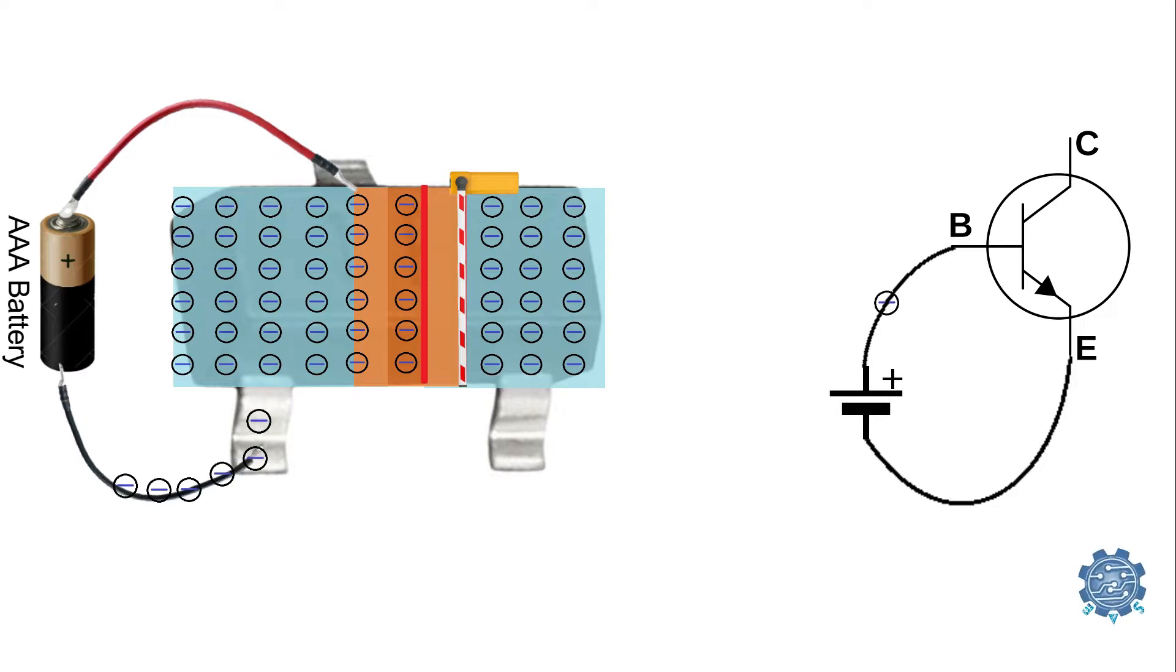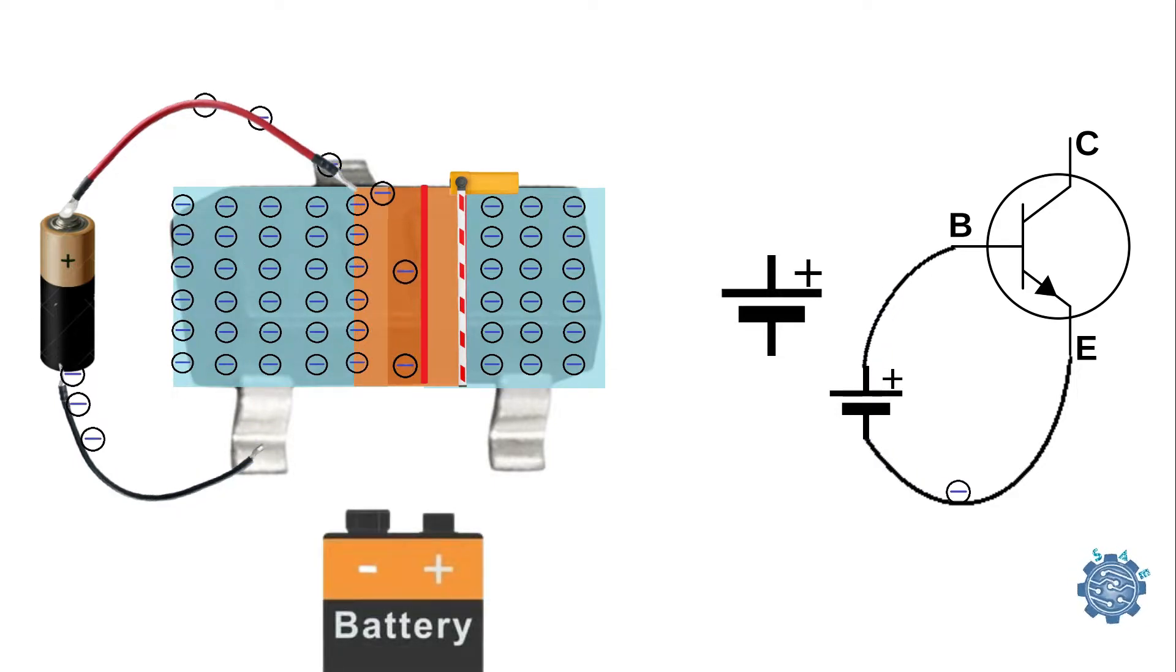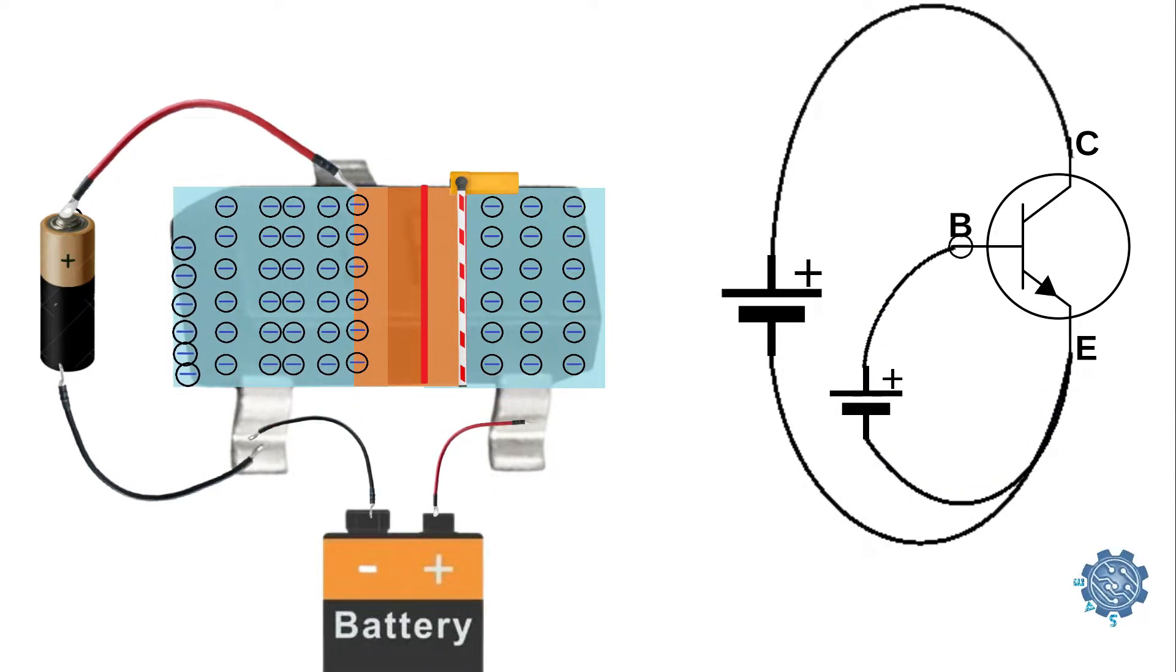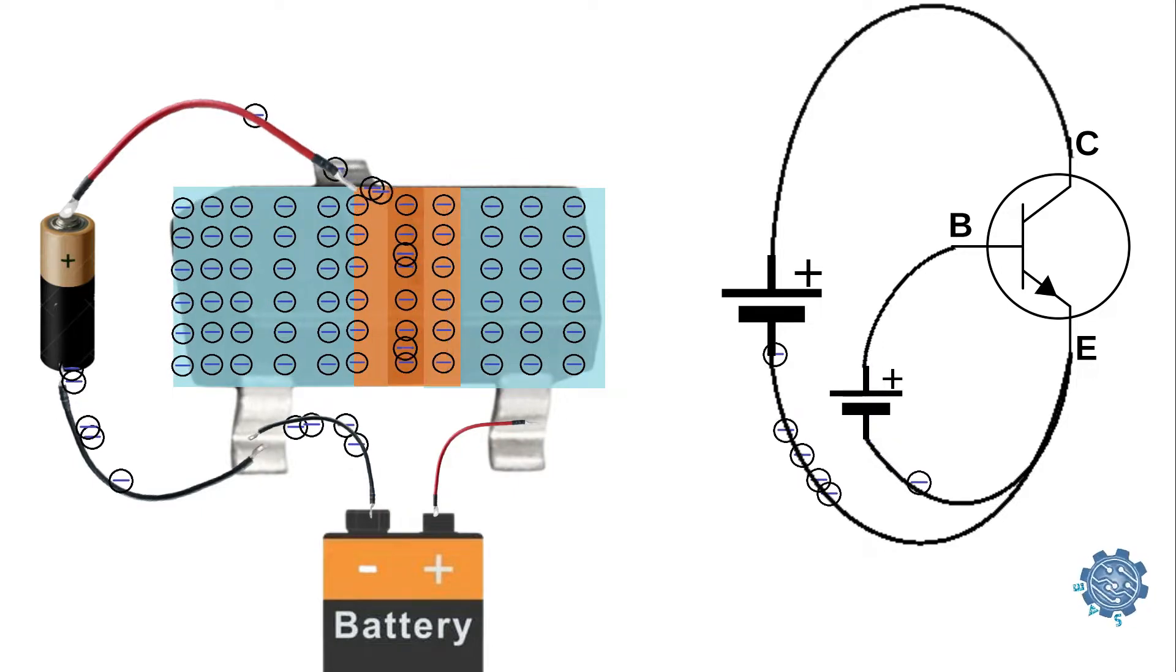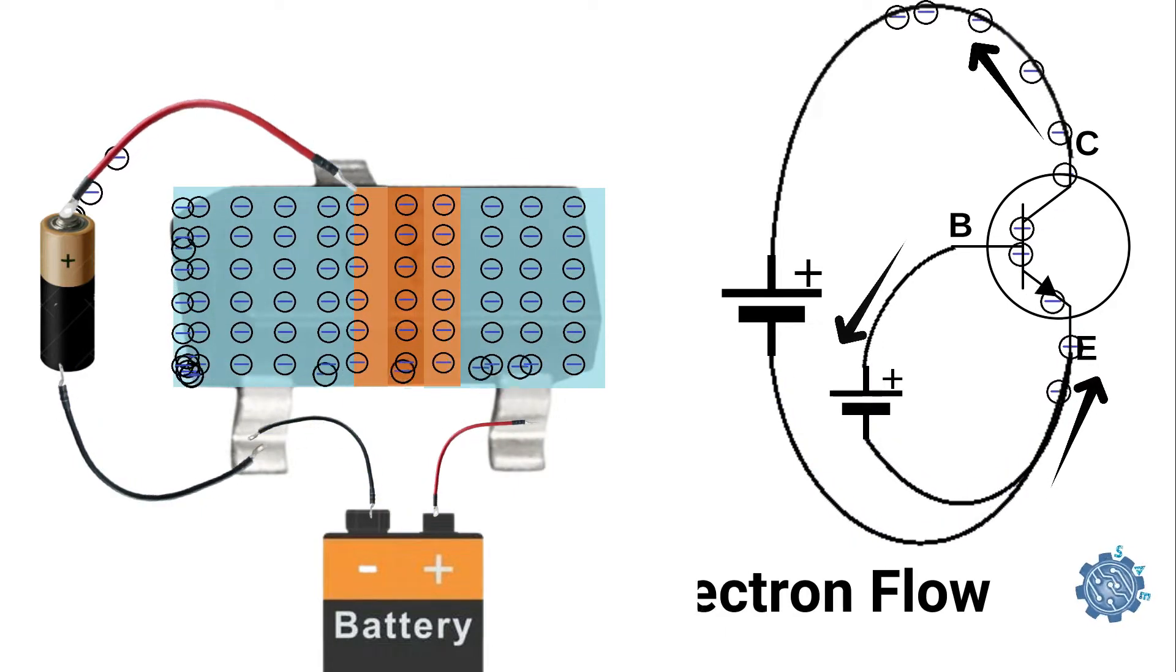After connecting a voltage supply between collector and emitter, the small number of electrons flowing from emitter into the base will allow a higher amount of electrons to flow from emitter into the collector.